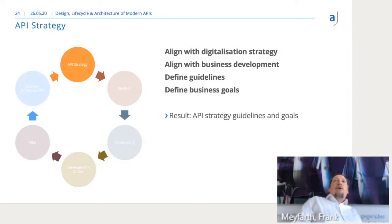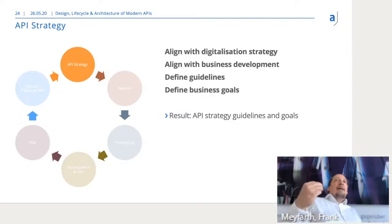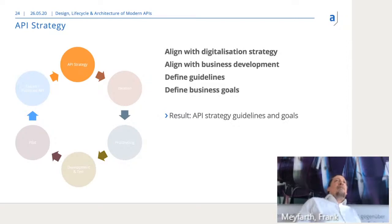First, we start with the API strategy. We try to align with the general digitalization strategy of the company and with business development, because an API strategy always has to do with business. It's about thinking about what guidelines we want to use, what our business goals are, and where we want to go with APIs. The result of this phase is typically an API strategy document with guidelines and a definition of goals.